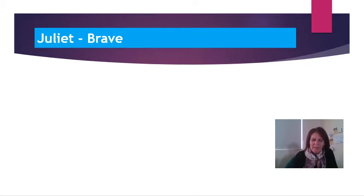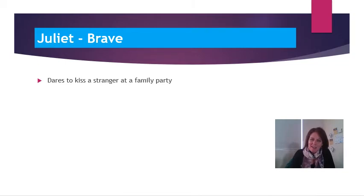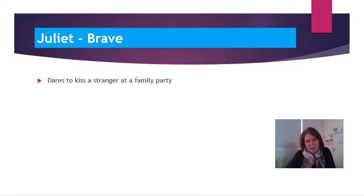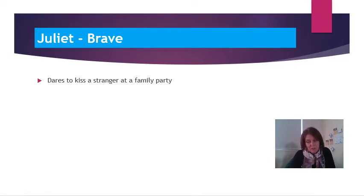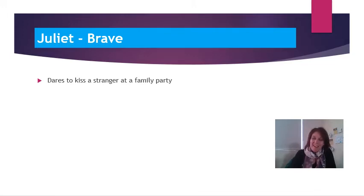Now let's take a look at Juliet and the word I'm going to sum her up with is brave. I feel Juliet is brave because she dares to kiss a stranger at a family party, and it's important that we remember Juliet is growing up in a society ruled by men — that patriarchal society where daughters are expected to be obedient and do as their parents tell them. Despite this, she dares to kiss a stranger and goes even further by passing comment on the kiss.